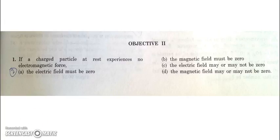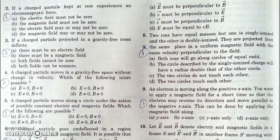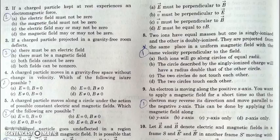In the next question, it is quite similar: if a charge which is kept at rest experiences an electromagnetic force. Again, the electric field must be non-zero because it experiences an electromagnetic force, and a charge at rest cannot experience magnetic force, so magnetic field may or may not be zero. Again, the answer will be A and D.